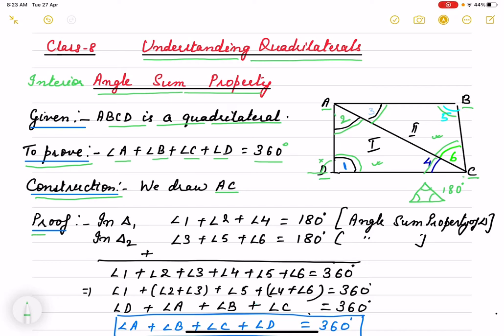Now, we are going to prove it. I divided it into 2 triangles because we know that triangle angle sum property is 180 degrees. This one is first triangle. This one is second. And I name it: 1, 2, 4, 3, 5, 6 like that.